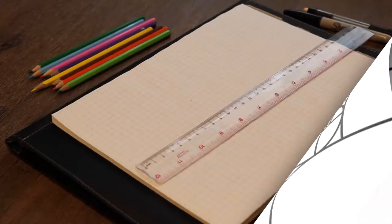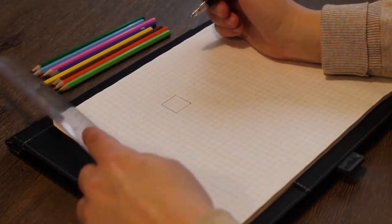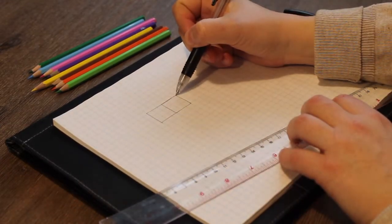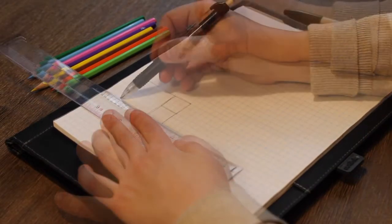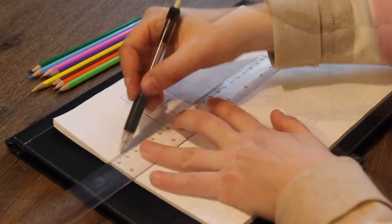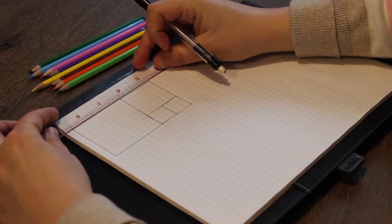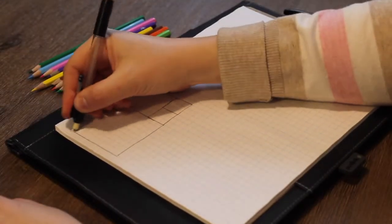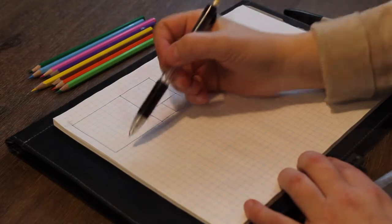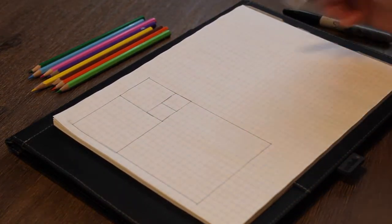We are going to start by drawing the Fibonacci spiral. So first we will draw a square, and then we will draw another square right next to it. Then we are going to draw a square on top. I'm drawing this roughly, and then we are going to draw a square to the left of what we've got. And then we are going to draw another square at the bottom, and then we are going to draw a square right here.